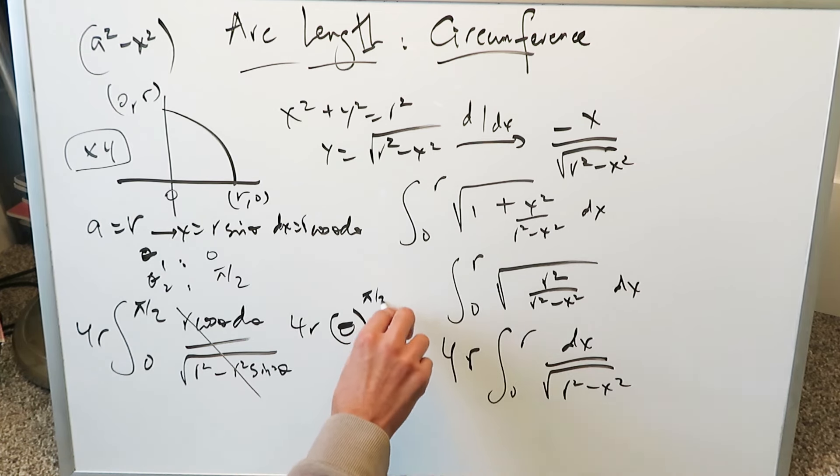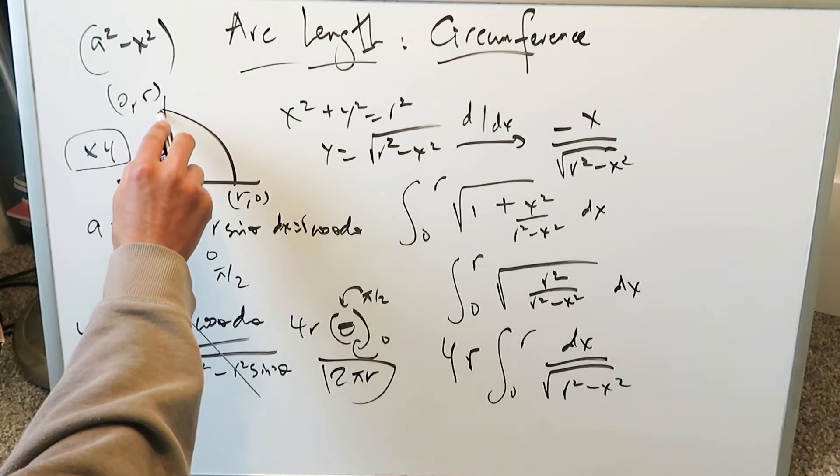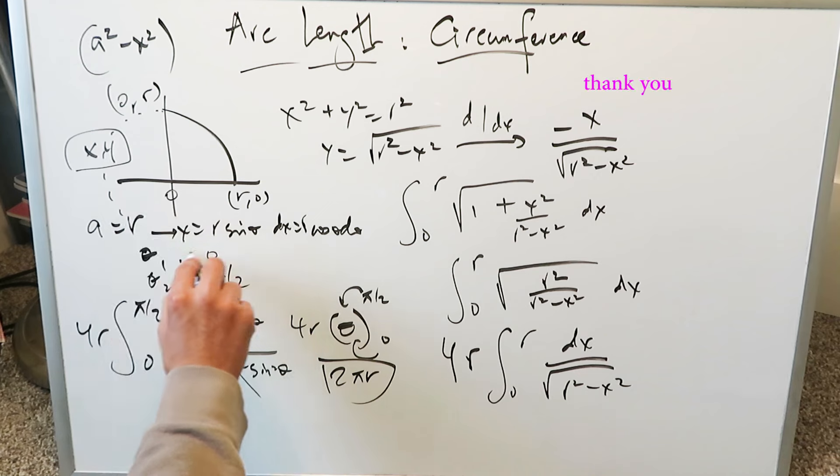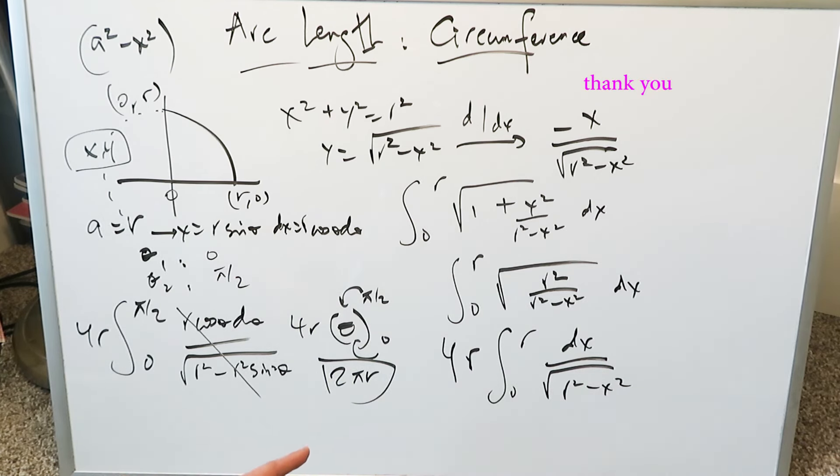Essentially the only thing which comes here in terms of the antiderivative is a θ. You have here π/2 and 0. Put this in, put this in and the difference of the two. 4r(π/2) is 2πr and that will be the circumference of a circle by means of the arc length formula. 4r times π/2 is 2πr.